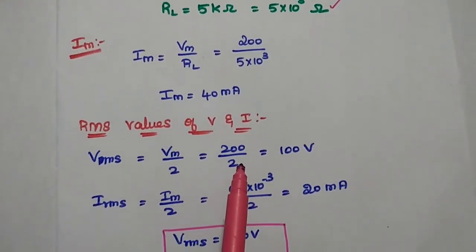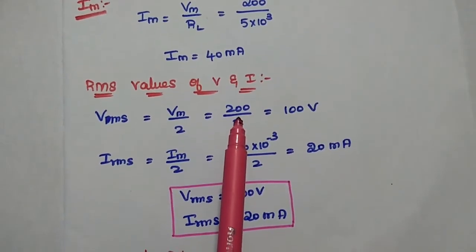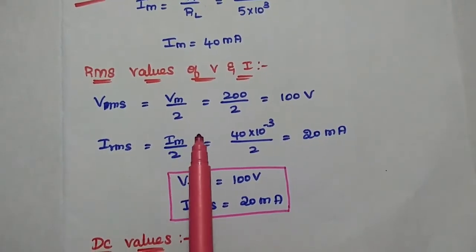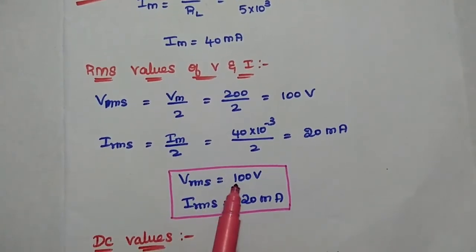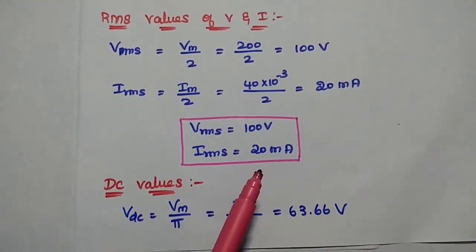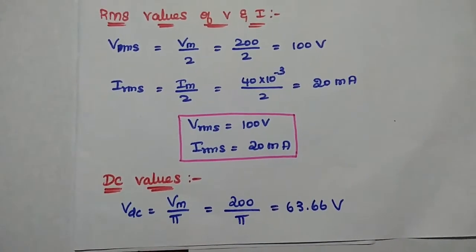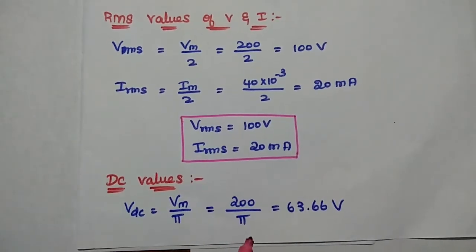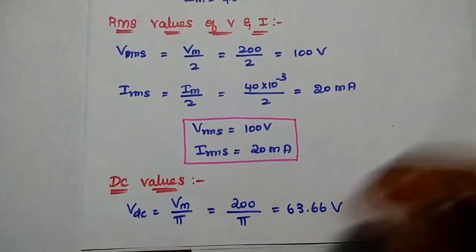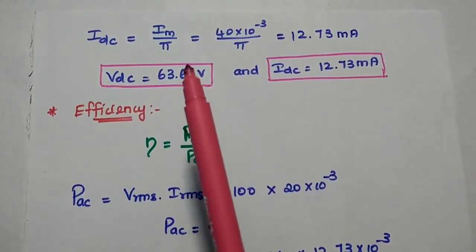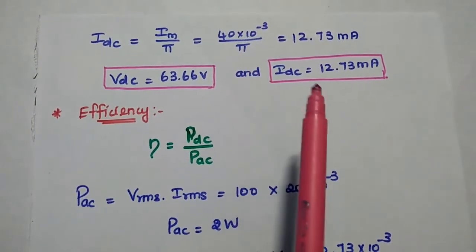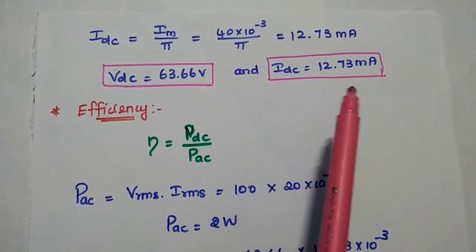The RMS values are: Vrms = Vm/2 = 100 V and Irms = Im/2 = 20 mA. The DC values are: Vdc = Vm/π = 200/π = 63.66 V and Idc = Im/π = 40 × 10⁻³/π = 12.73 mA.